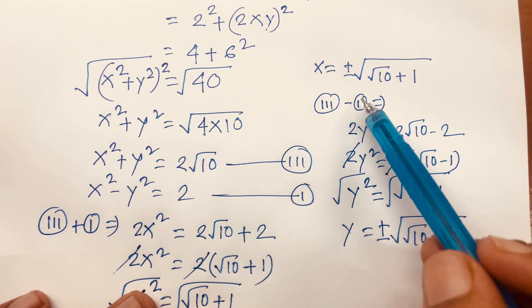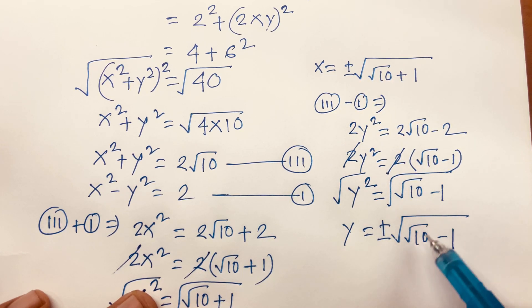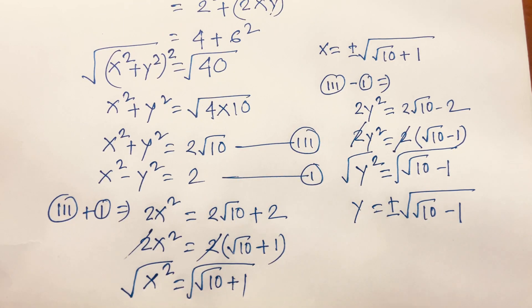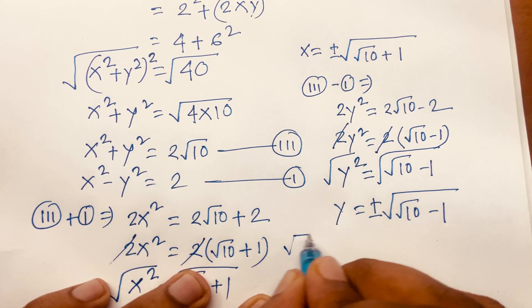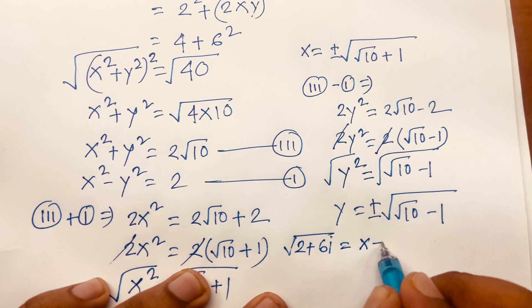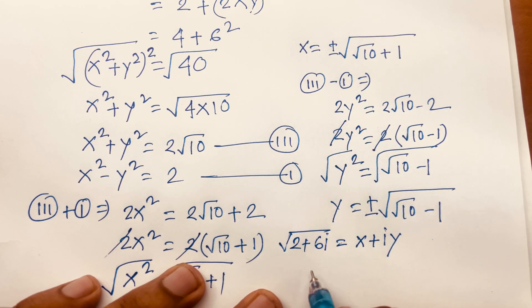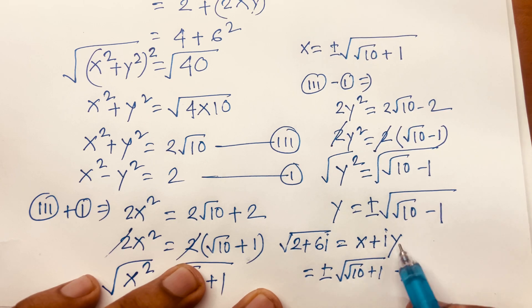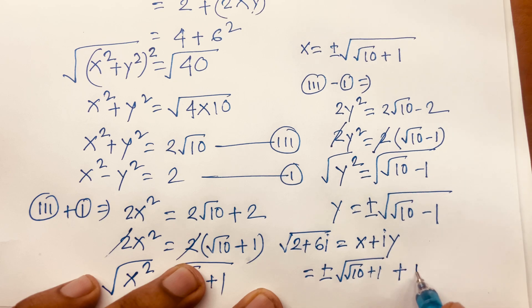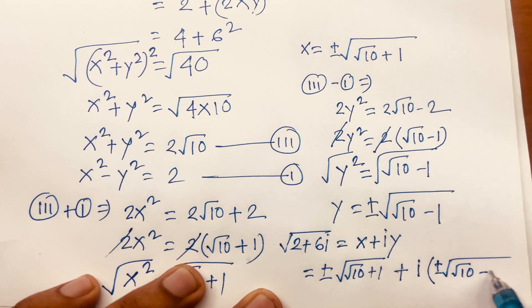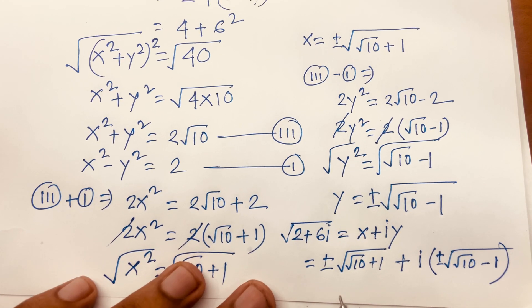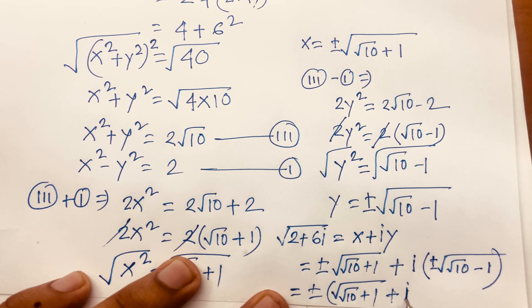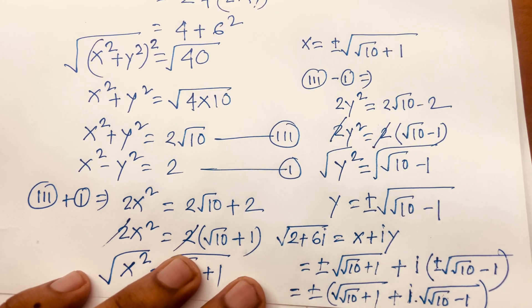So x = ±√(√10 + 1) and y = ±√(√10 - 1). Recalling that √(2 + 6i) = x + iy, the final answer is: √(2 + 6i) = ±(√(√10 + 1) + i·√(√10 - 1)).